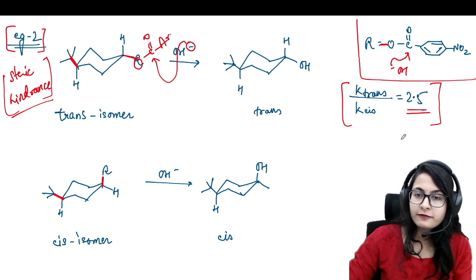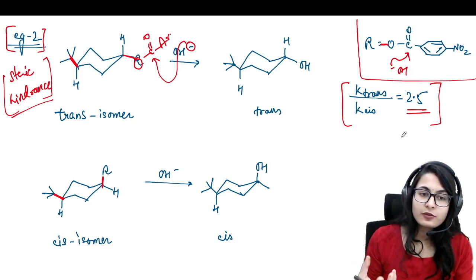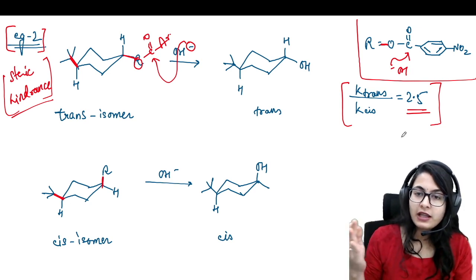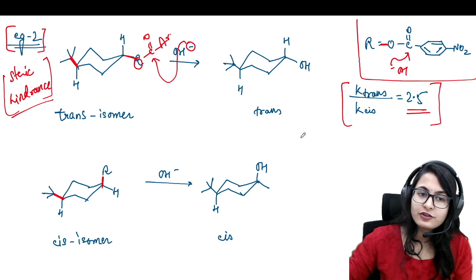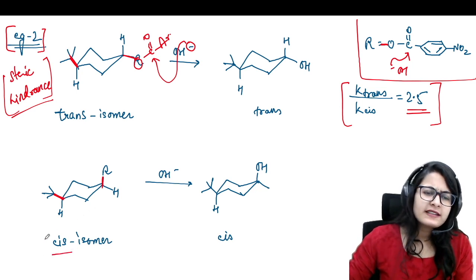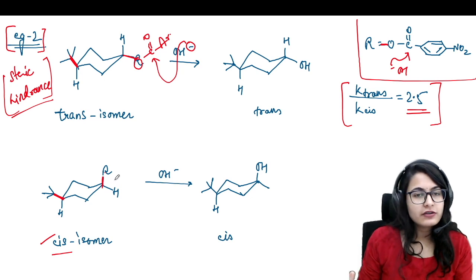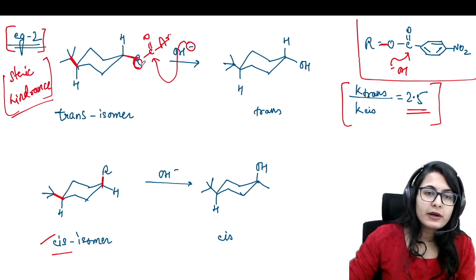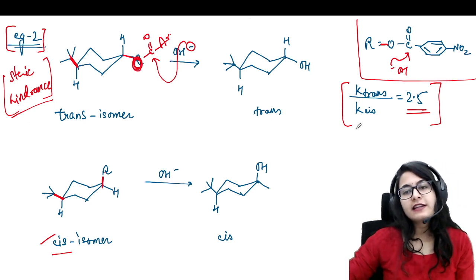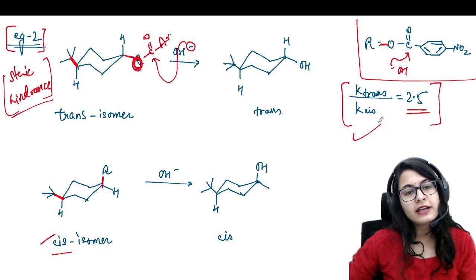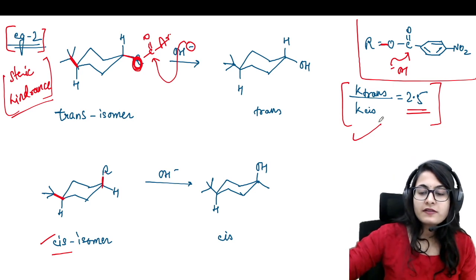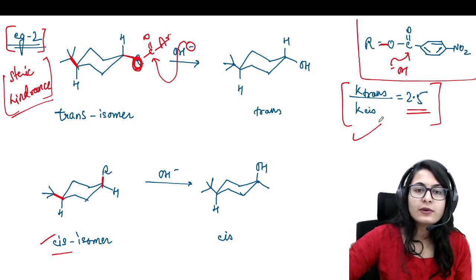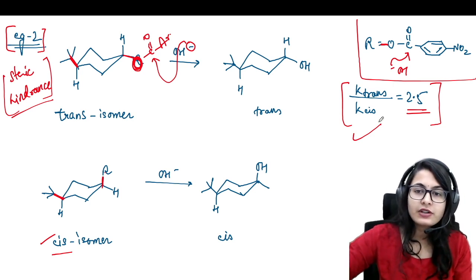The trans isomer is going to be only 2.5 times faster than the cis isomer. The same mechanism applies — cis isomer hydrolyzes through the tetrahedral intermediate — just that the attack site is one oxygen atom away from the ring, so the effect is less pronounced. These are the two examples of steric hindrance: when it causes to slow down the reaction. Steric hindrance means the axial isomer is going to react slow.